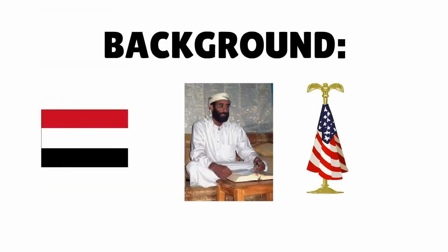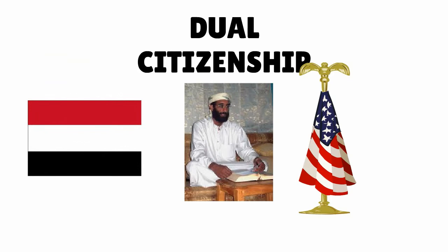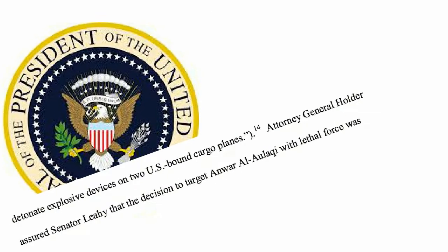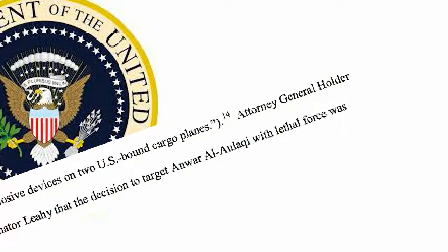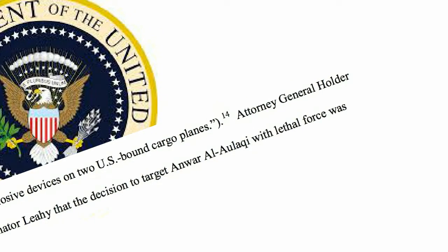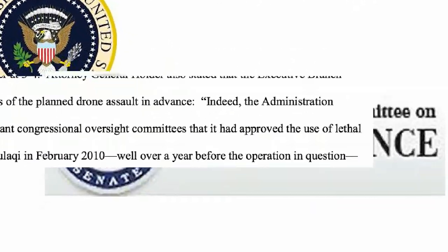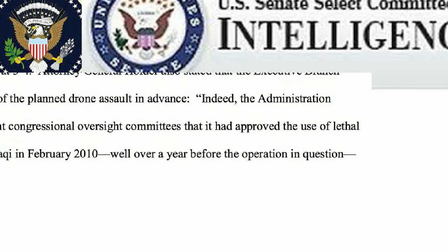Mr. Aulaki was a citizen of the United States and he was also a citizen of Yemen. In the United States, it's possible to have dual citizenship, so you can be a citizen of America at the same time that you are a citizen of a different country. Our story begins in February of 2010. At that time, officials who worked for the President of the United States determined that Mr. Aulaki was a dangerous terrorist and that the United States should kill him. Officials working for the President also informed certain members of Congress that they had made the determination to kill Mr. Aulaki.